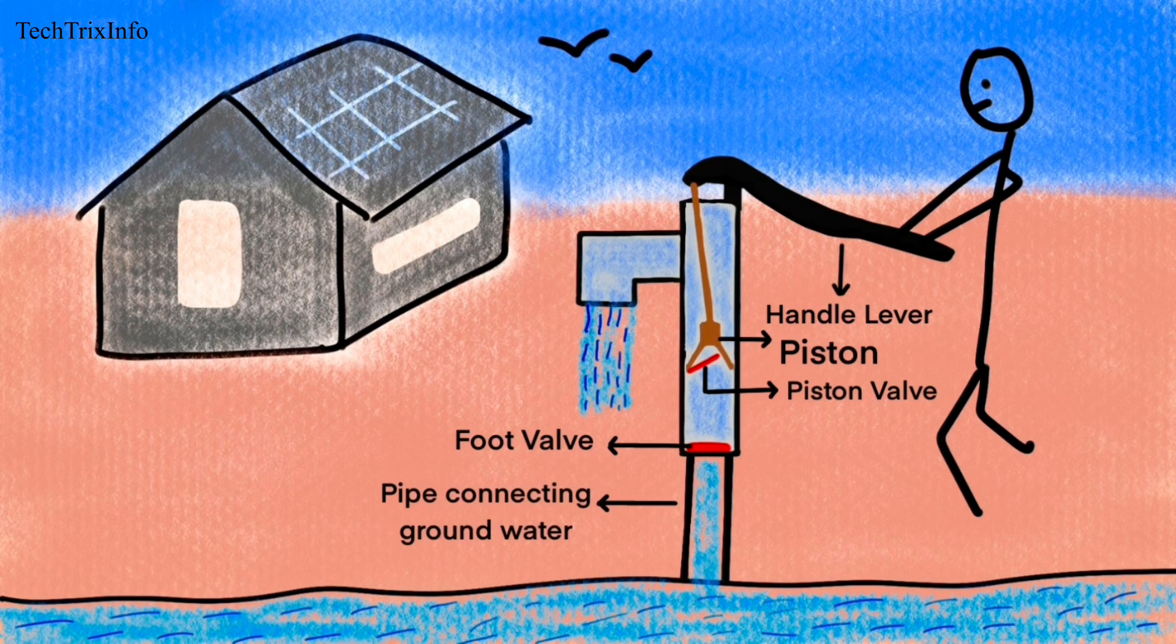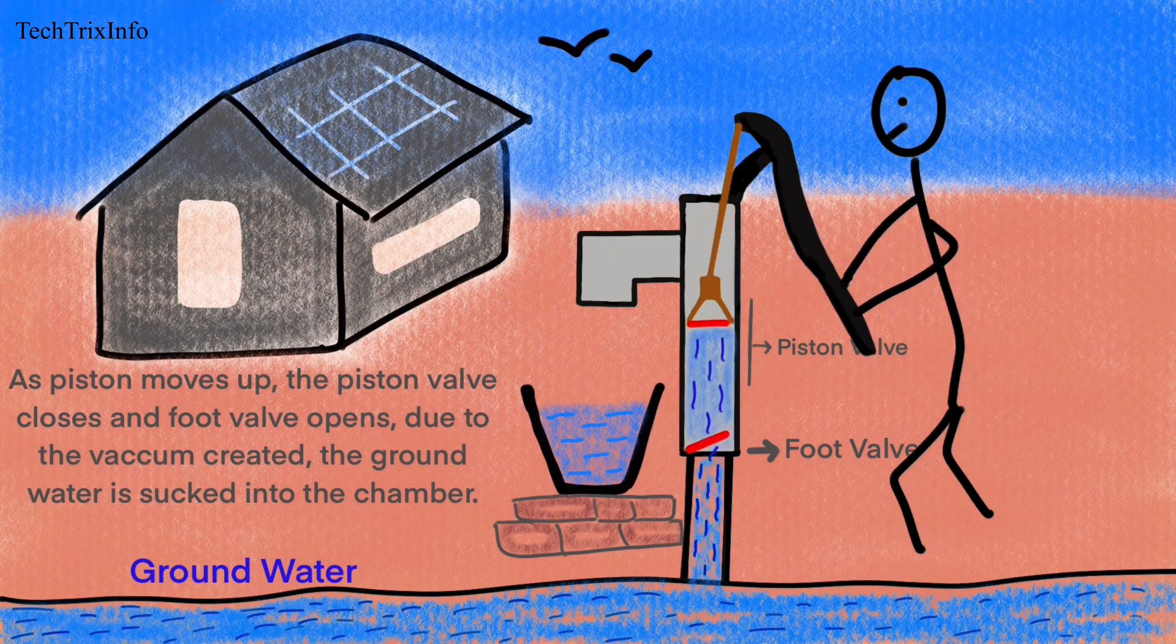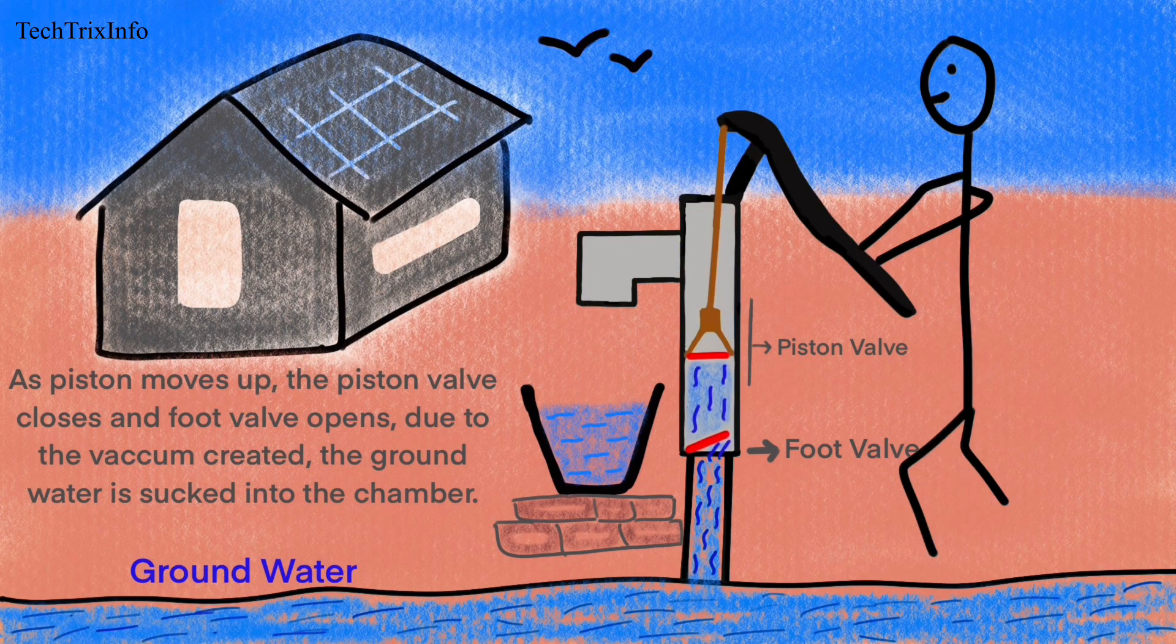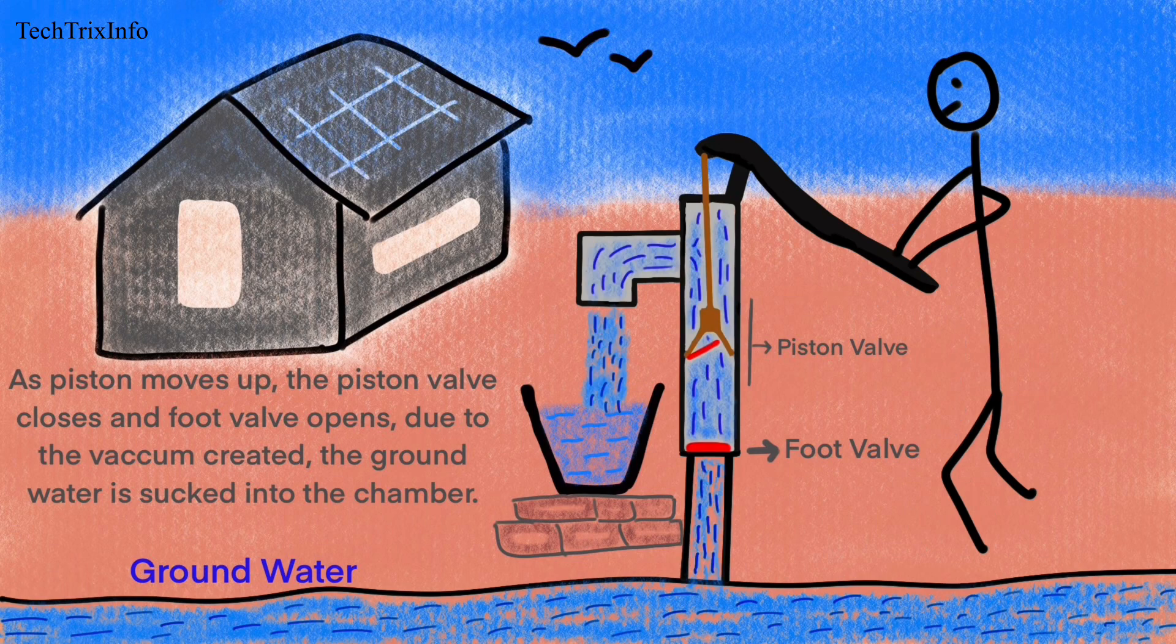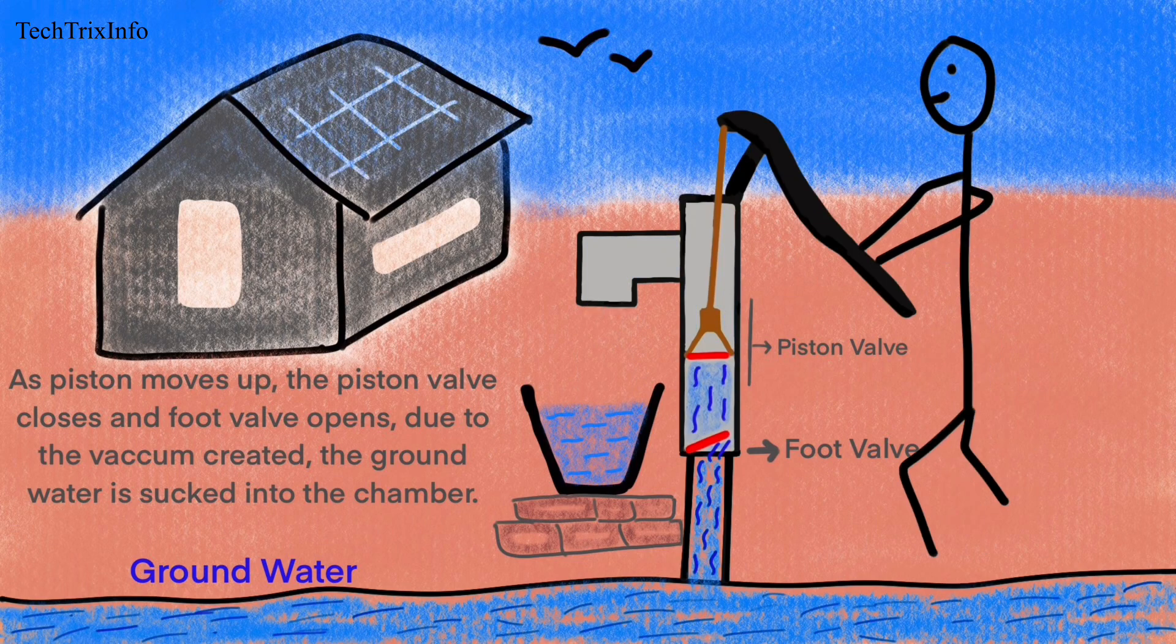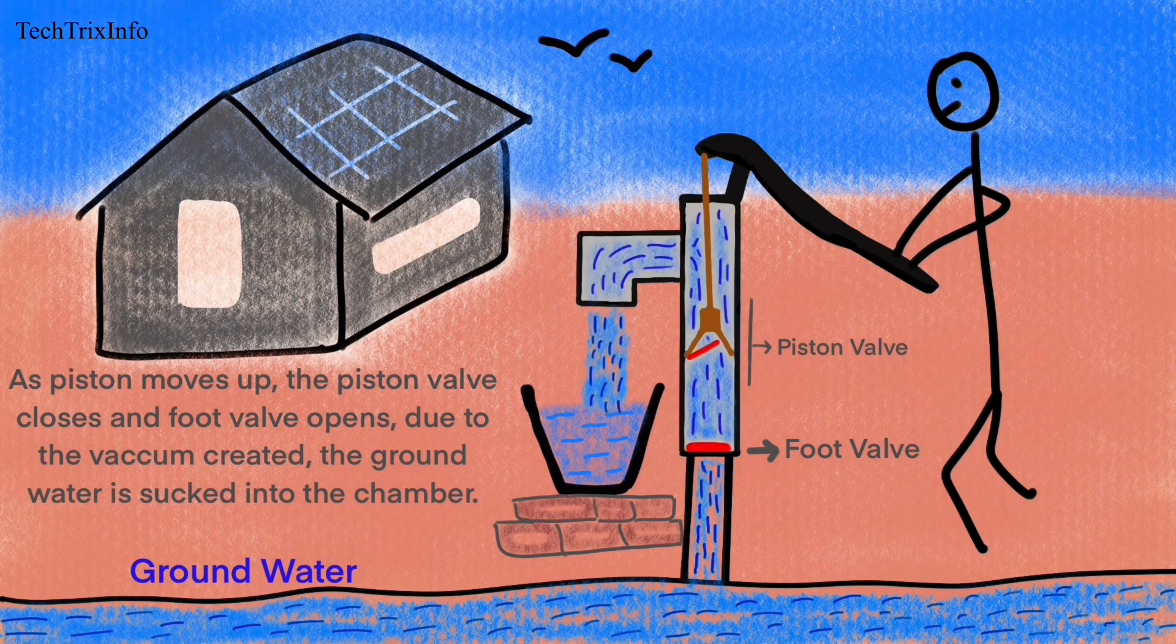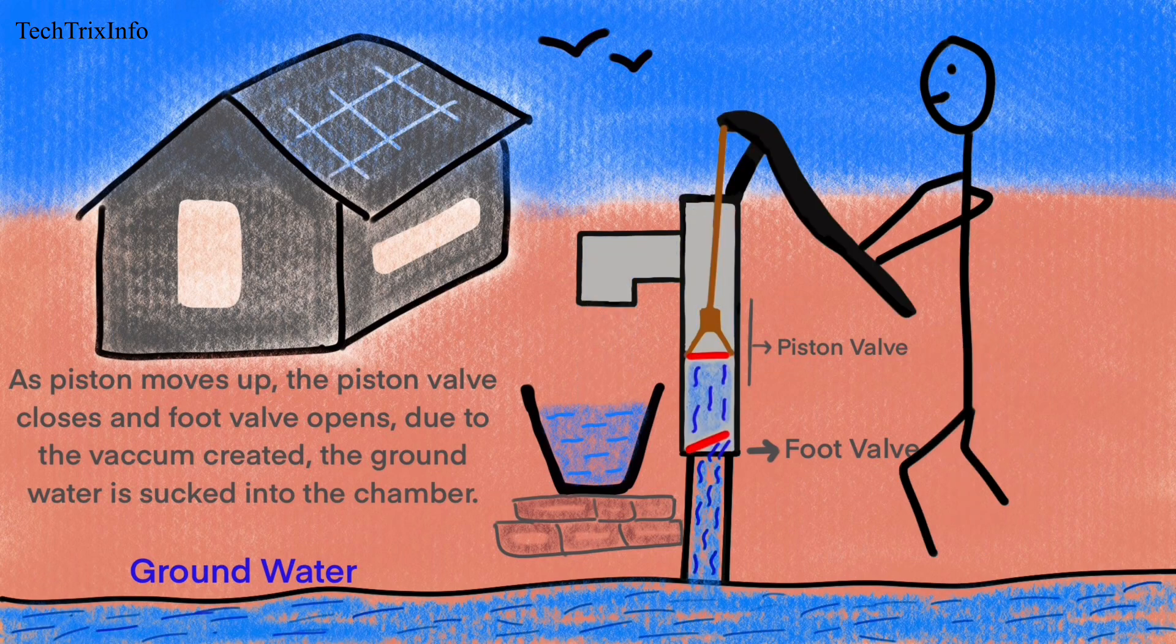As the piston moves up, the piston valve closes and the foot valve opens, as you can see here in the animation. Due to the vacuum created in the region, the groundwater is sucked into the chamber.